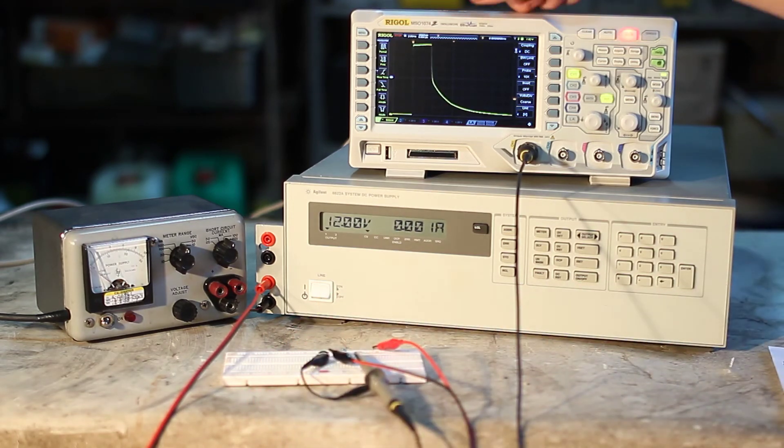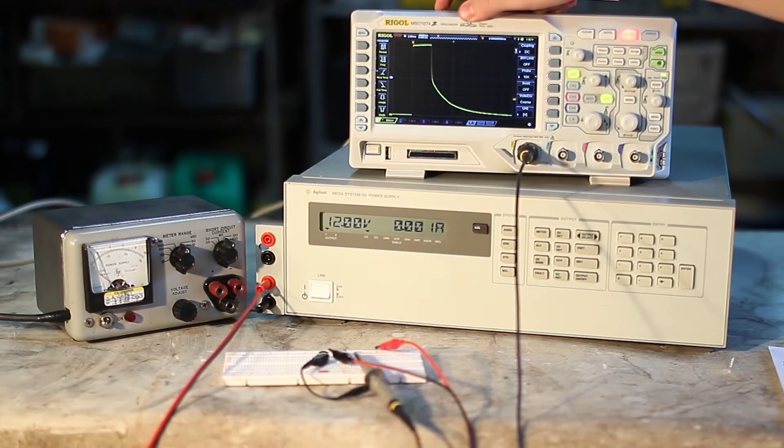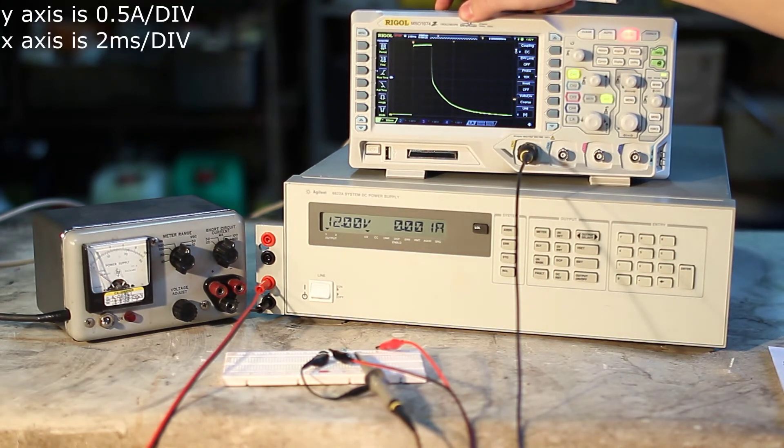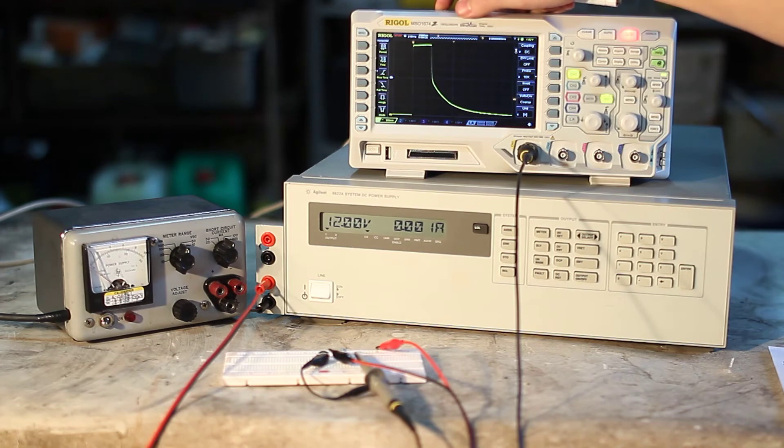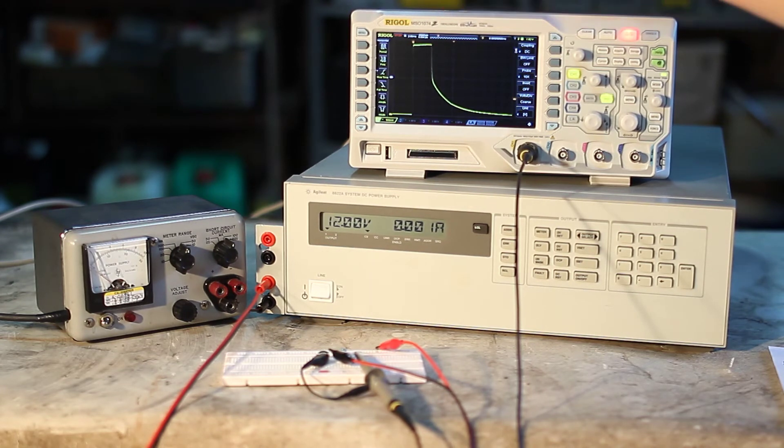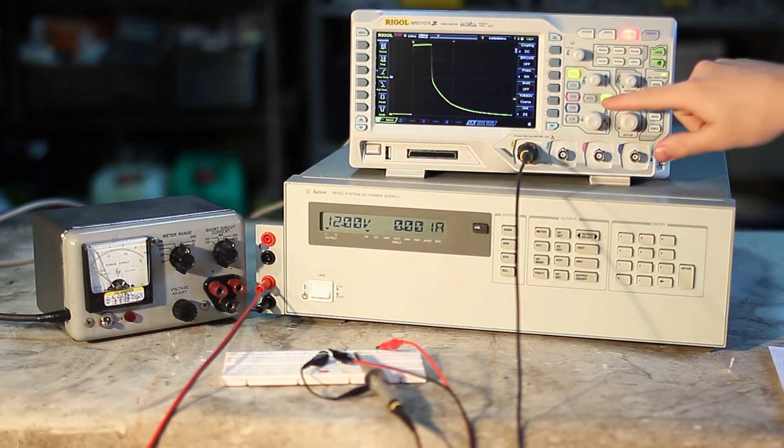As we can see, the power supply delivers a current of up to 3.5A before it can be limited to 100mA. Let's save this waveform.